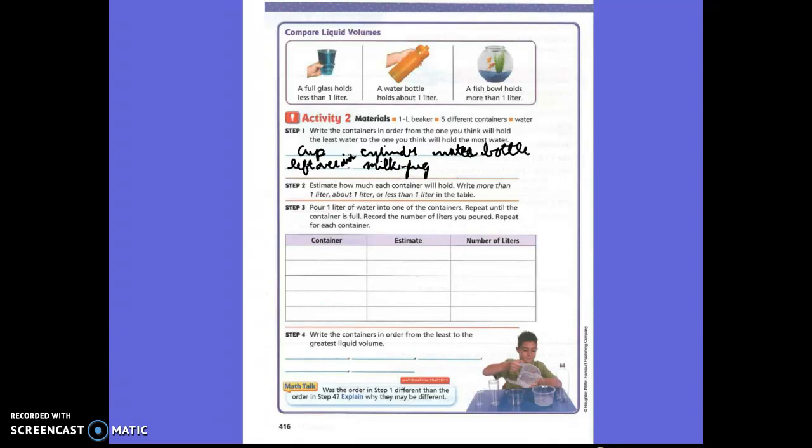All right, now we are going to estimate how much we think each produce is going to hold. So, now we need to go to cup. Write cup down here. Do you think it's going to hold more than one liter, about one liter, or less than one liter? Less than. Okay, let's write less than. Less than one liter. One L.